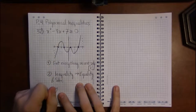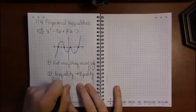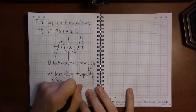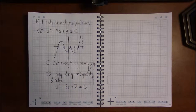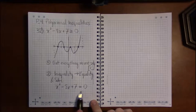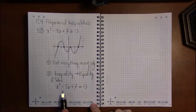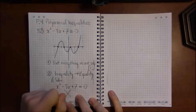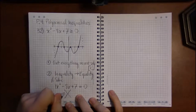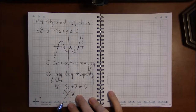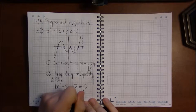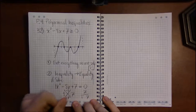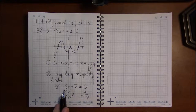We take x² − 8x + 7 and instead of greater than or equal to, we switch it to equal to zero and solve. This is a quadratic that's going to factor. The leading coefficient is one and the constant term is seven. The only factors of seven are one and seven, so we use −1 and −7 in order to add up to −8.